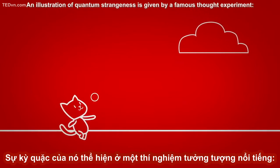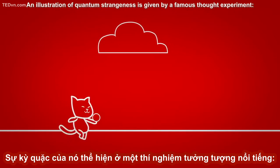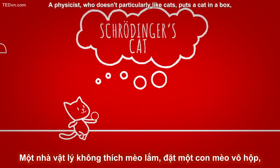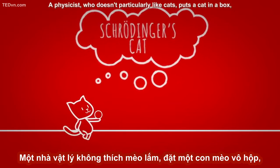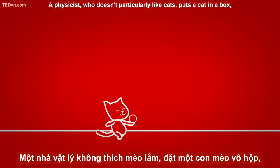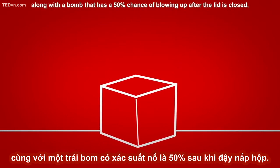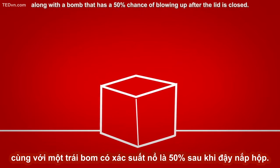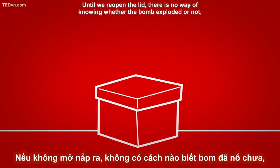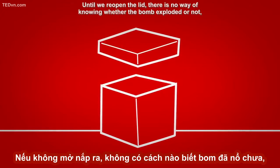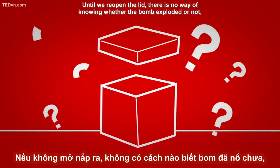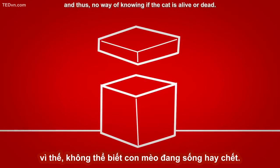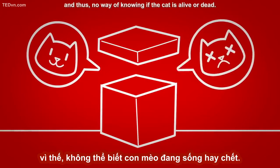An illustration of quantum strangeness is given by a famous thought experiment: Schrödinger's cat. A physicist who doesn't particularly like cats puts a cat in a box, along with a bomb that has a 50% chance of blowing up after the lid is closed. Until we reopen the lid, there is no way of knowing whether the bomb exploded or not, and thus no way of knowing if the cat is alive or dead.